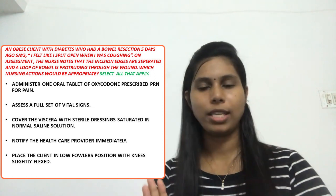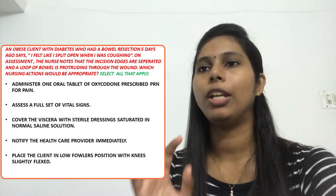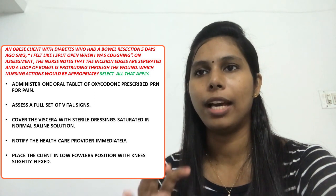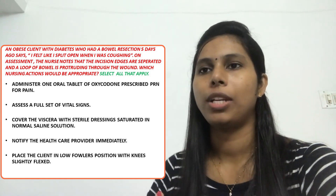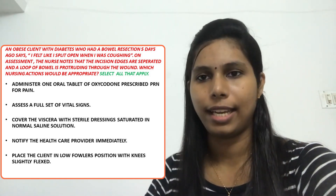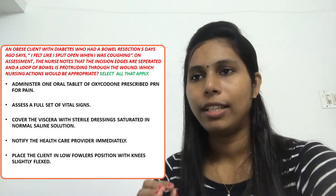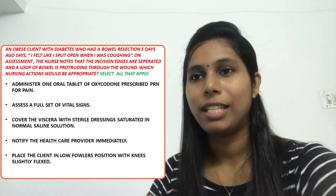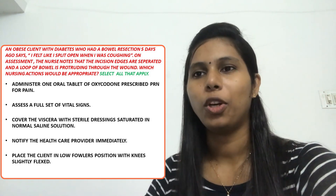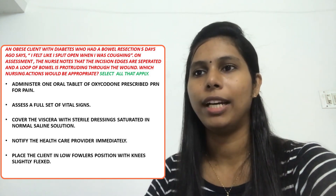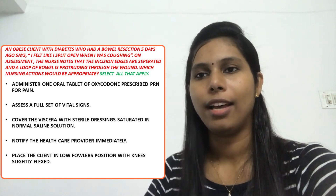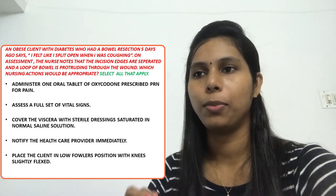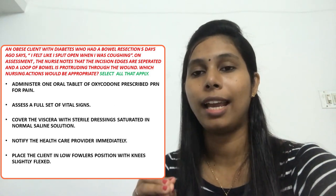There are five options. First option: Administer an oral tablet of Oxycodone prescribed PRN. Second option: Assess a full set of vital signs. Third option: Cover the viscera with sterile dressing saturated in normal saline solution. Fourth option: Notify the healthcare provider immediately. Last option: Place the client in low Fowler's position with knees slightly flexed.